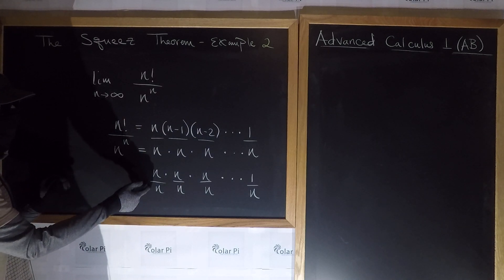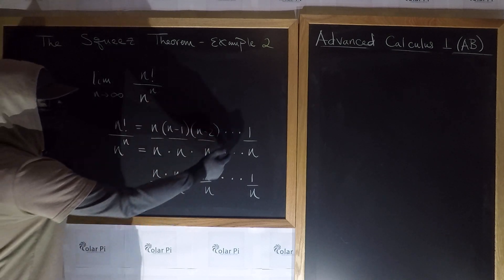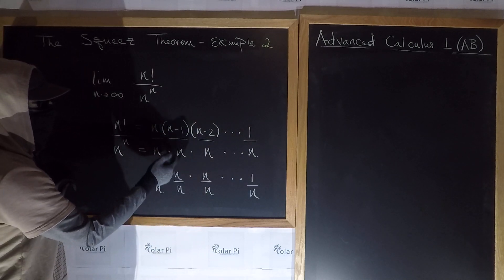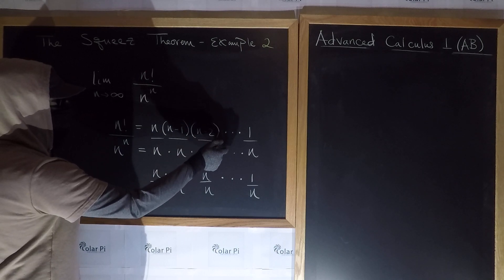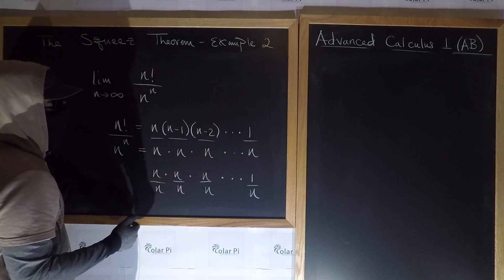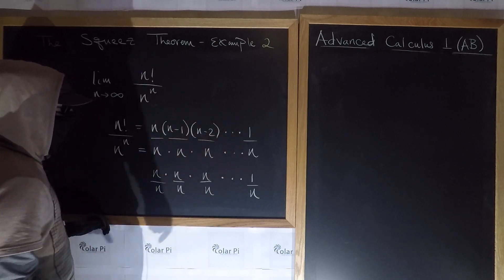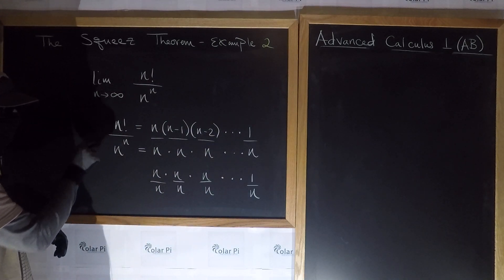Because, obviously, n over n is the same in both, and 1 over n is the same in both. But all of these are ones, and all these other guys, the n minus 2 guys in between, are smaller than the n minus 2 guys in between here. And so this has got to be bigger than this.